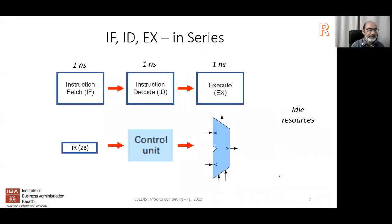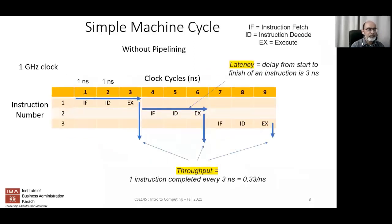In the processor you have three activities: instruction fetch, decode, and execute, happening in series. If you did them in parallel you could improve throughput. Without pipelining, each instruction takes three cycles — one for fetch, one for decode, and one for execute — done in series.